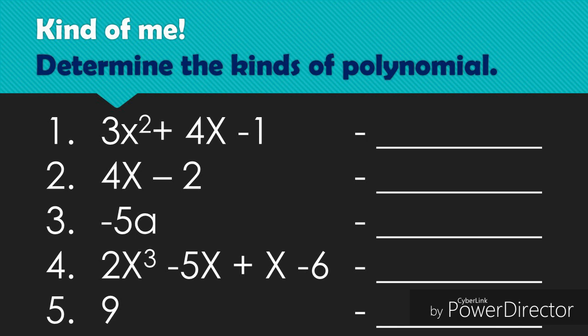Now let's have a practice. We're going to determine whether each is a monomial, binomial, trinomial, or multinomial. Number 1: 3x squared plus 4x minus 1. Number 2: 4x minus 2. Number 3: negative 5a. Number 4: 2x cubed minus 5x plus x minus 6.